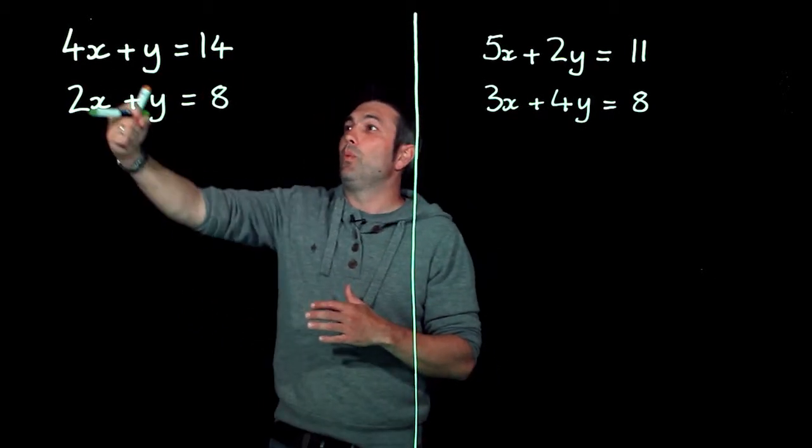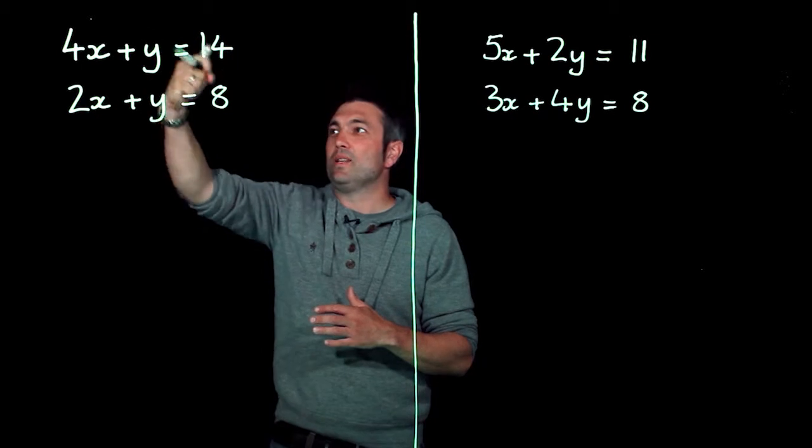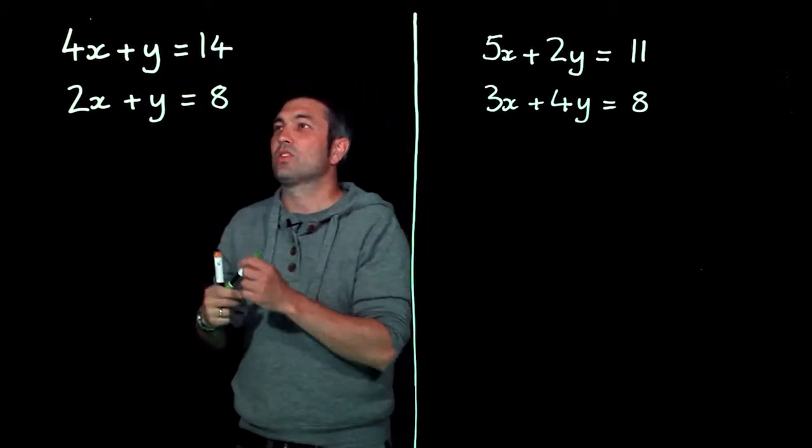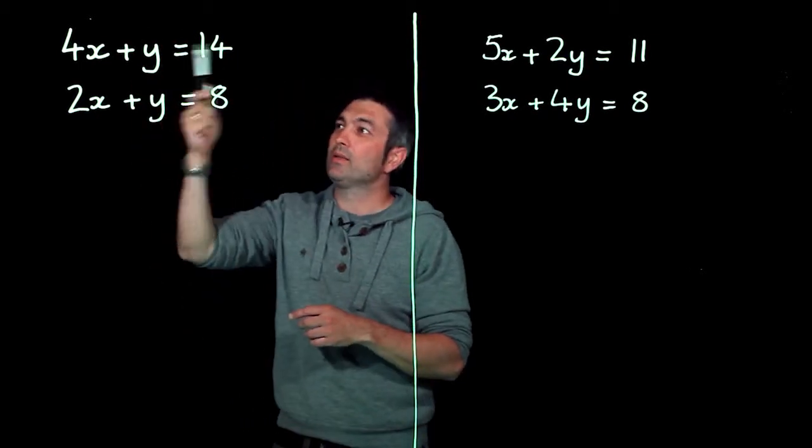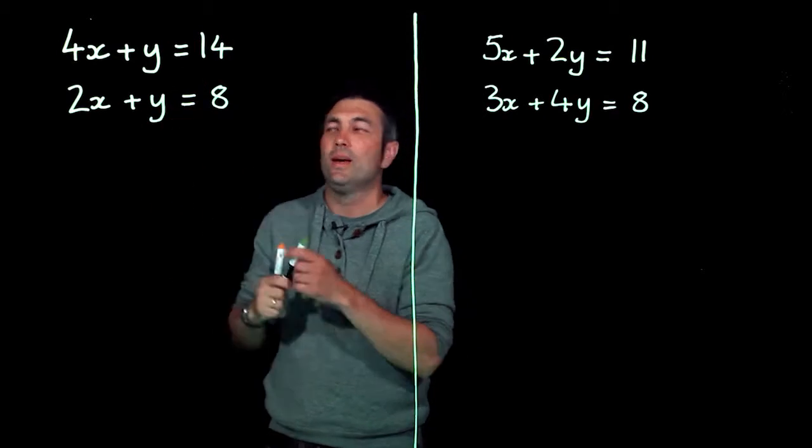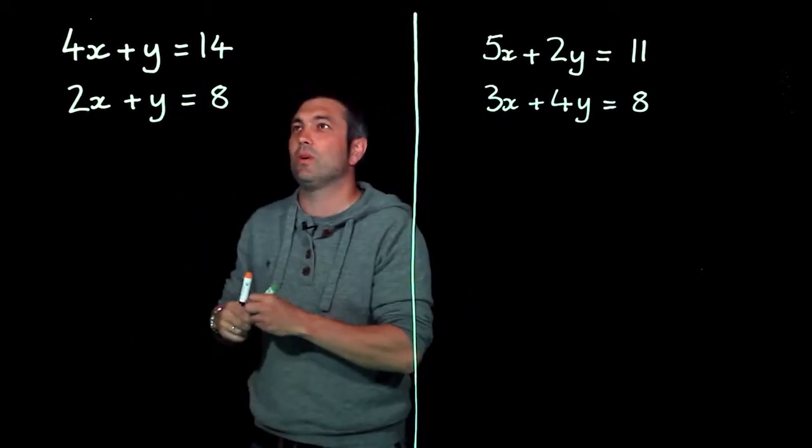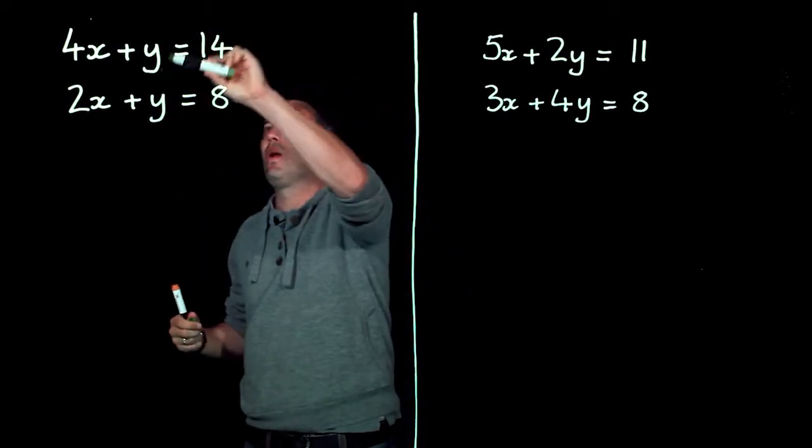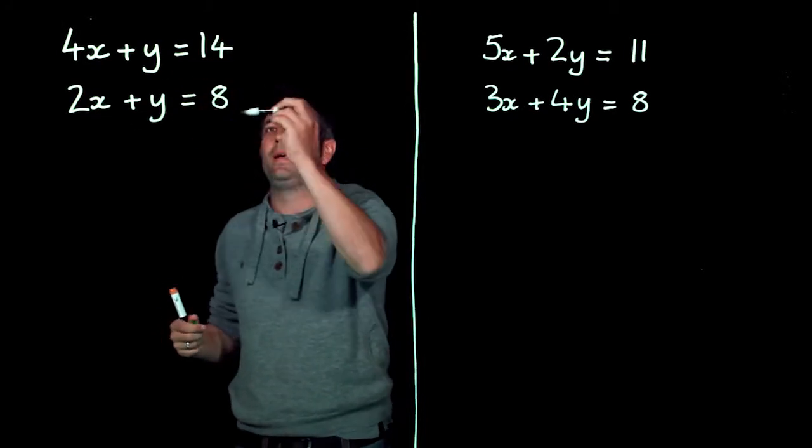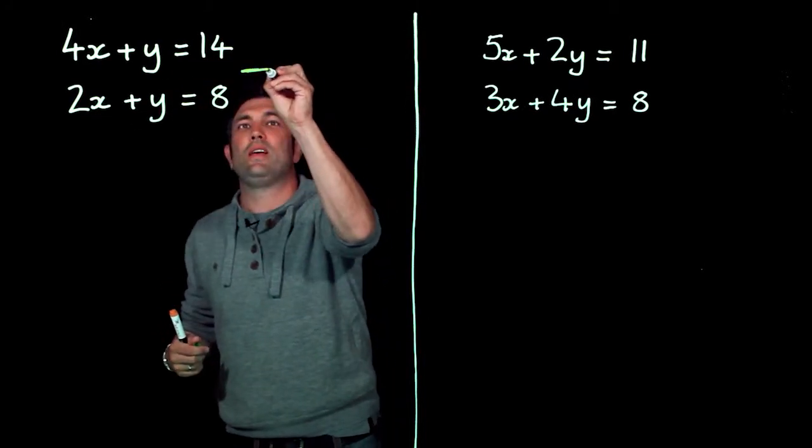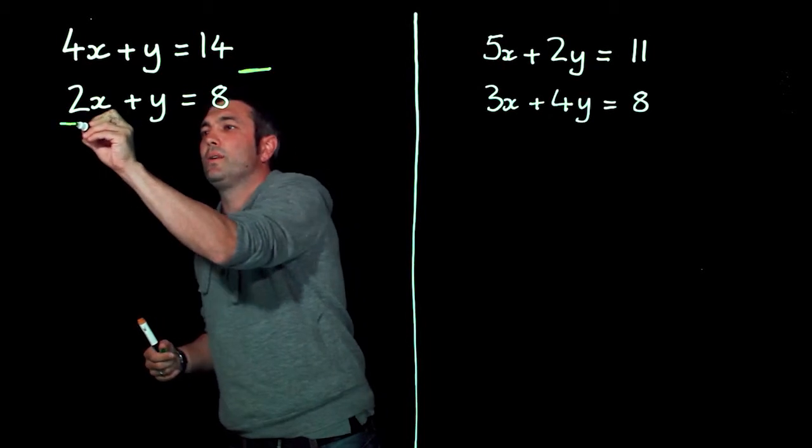Now here we're going to get rid of y in each case. So we've got the same amount of y's here so we don't need to do anything in order to get the same amount of y's. And all we're going to do, because we've got plus one y here and plus one y here, is we're going to find the difference or take away one equation from the other.